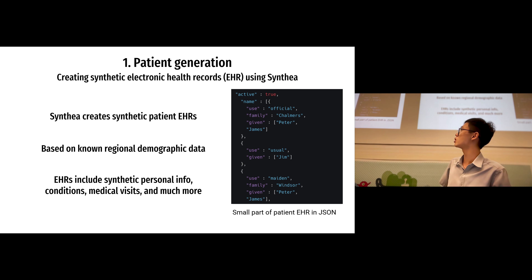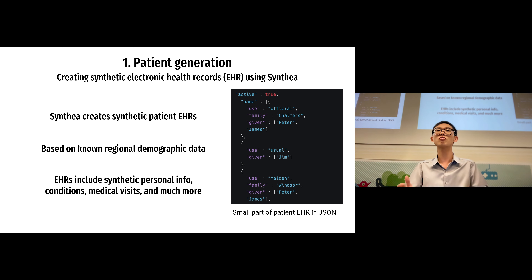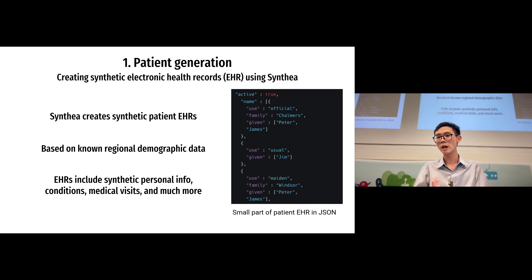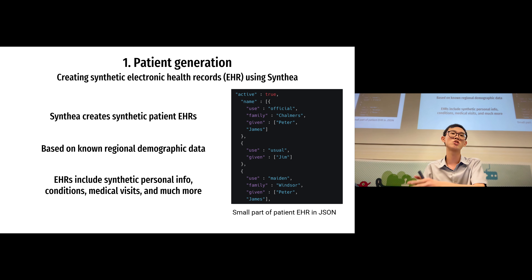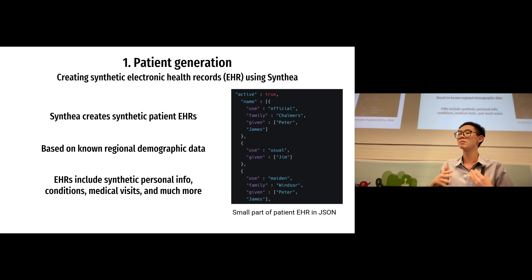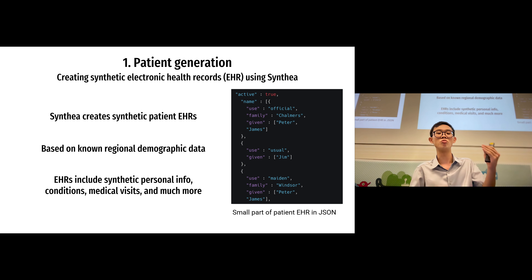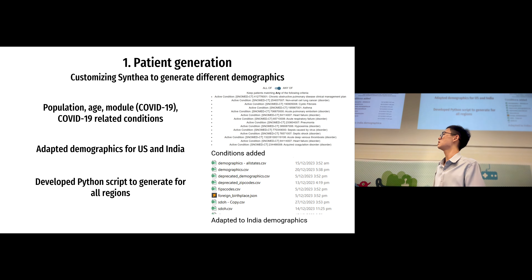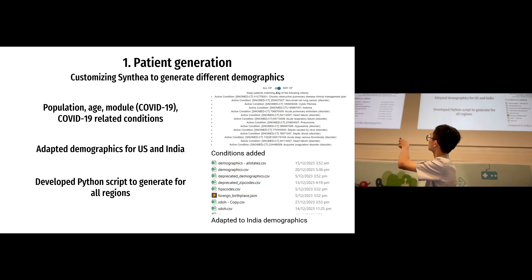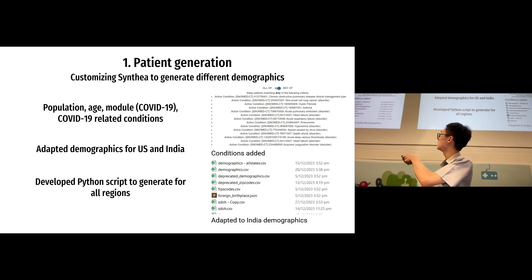We first start off with the synthetic patient generation, where we create synthetic electronic health records. An electronic health record is basically a record of you and every single condition, every time you visit the healthcare provider, and every time you get immunization for any disease. We don't get access to all this data, so we need to generate them synthetically — based on regional demographic data that we already know. In order to customize it to different demographics, I added different conditions like pneumonia and hypoxemia, and adapted them to the India demographic.